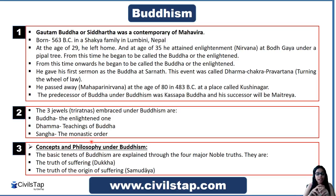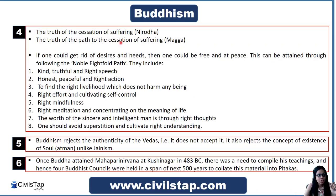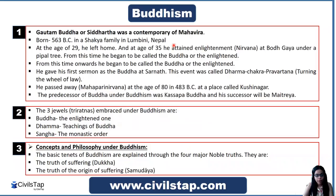Now we will know the basic tenets and philosophy on which Buddhism is based. The Four Noble Truths are: first, the truth of suffering, called Dukkha (pain); second, the truth of the origin of suffering, called Samudaya; third, the truth of the cessation of suffering, called Nirodha; and fourth, the truth of the path to cessation of suffering, called Magga. You have to focus on all four of these.